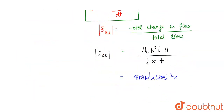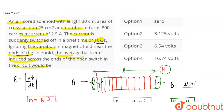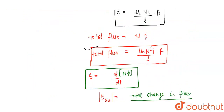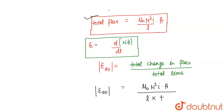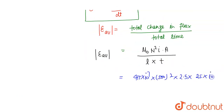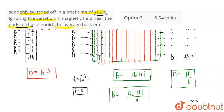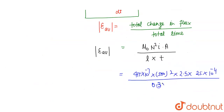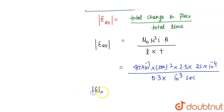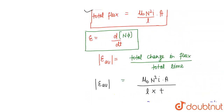Current I = 2.5 A. Area = 25 cm² = 25 × 10⁻⁴ m². Length L = 30 cm = 0.3 m. Time Δt = 10⁻³ seconds. Dividing all of this: average induced EMF = μ₀N²IA / (L × Δt). Solving this gives magnitude of average induced EMF = 6.5 Volts. The change in flux is initial flux minus final flux (which is zero), divided by total time 10⁻³ seconds.